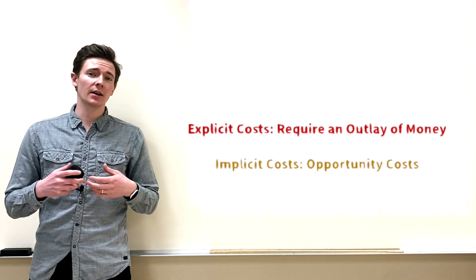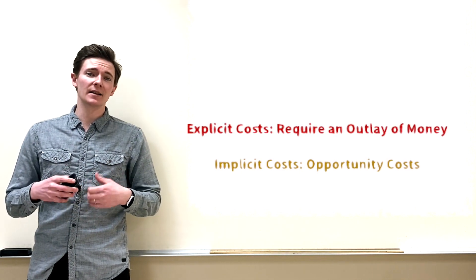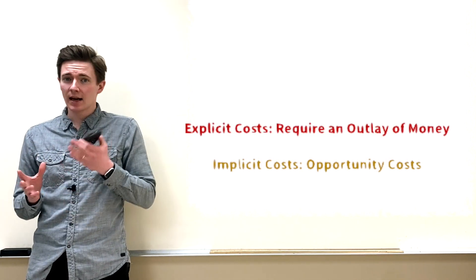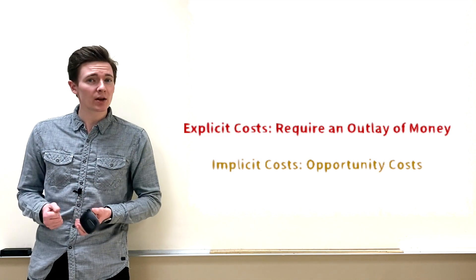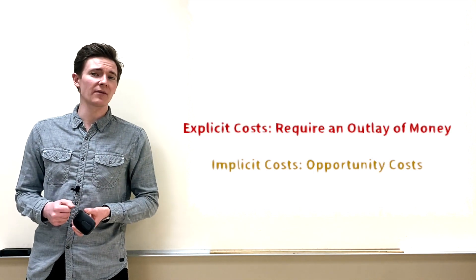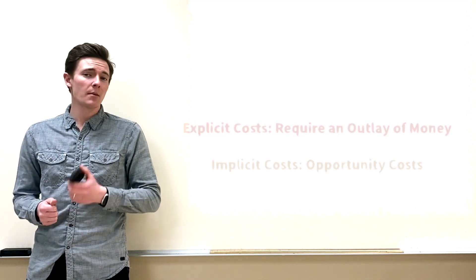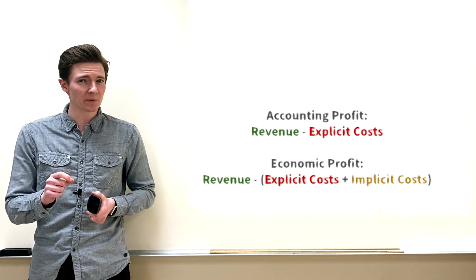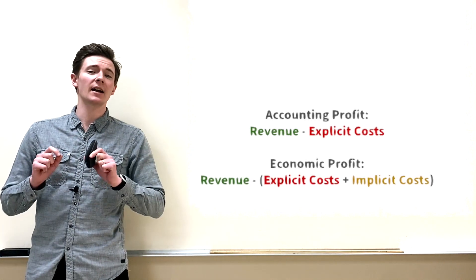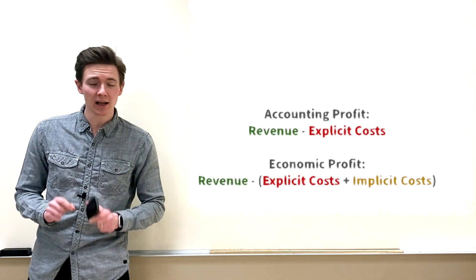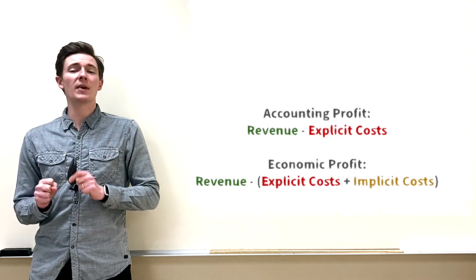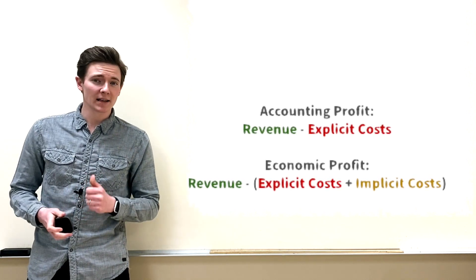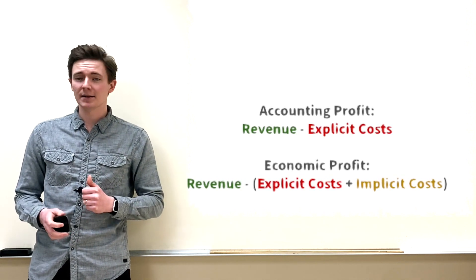Accountants might look at a company's explicit costs and revenue and say you're doing really well, because accounting profit is revenue minus explicit costs. Yet economists are a little more dismal — they say economic profit is revenue minus explicit costs as well as implicit costs.